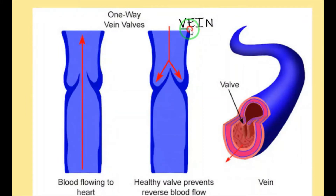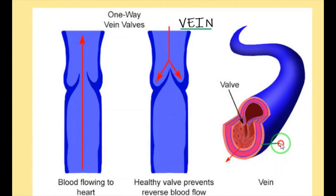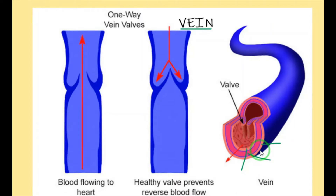The second blood vessel is vein. Veins are thin and non-elastic vessels. There are three layers present: outer layer, middle layer and inner layer. The walls are very, very thin. The function of the vein is to transport blood to the heart from the different organs — the opposite of what arteries do, which carry blood away from the heart to various organs.